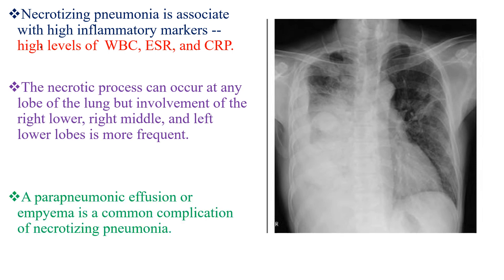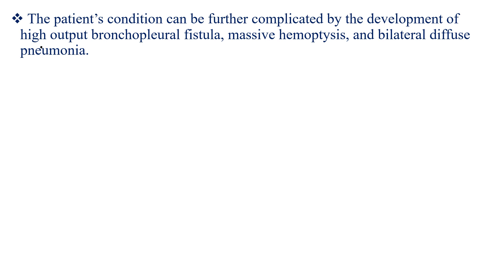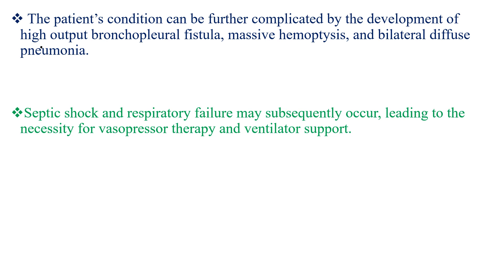A parapneumonic effusion or empyema is a common complication of necrotizing pneumonia. The patient's condition can be further complicated by the development of bronchopleural fistula, massive hemoptysis, and bilateral diffuse pneumonia. Septic shock and respiratory failure might subsequently occur in some patients, leading to the need for vasopressor therapy and ventilator support, while others might present as pneumonia but fail to improve as expected.